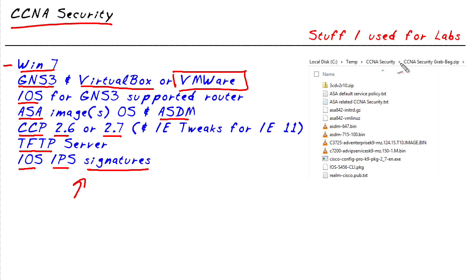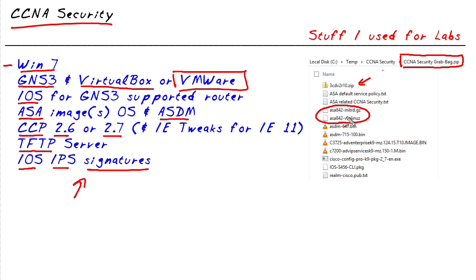I did some snooping around and I found this — the CCNA Security grab bag dot zip, which had all these files in it. There's a TFTP server software file. These two files right here are what GNS3 needs to emulate an ASA. For details on how to configure GNS3 to support the ASA, check out the GNS3 series at CBT Nuggets, which demonstrates exactly how to set up the ASA inside of a GNS3 environment. These two are ASDM versions — you only need one — and that's the software we'd copy over to the virtual hard drive of the ASA so we can use the ASDM graphical user interface.